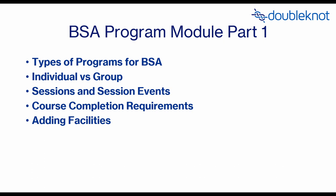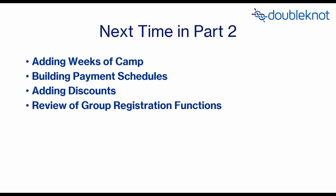Today's video is the program module for Boy Scouts, part one. We're going to go through the program module and how to best utilize it for Boy Scouts of America councils. There are really two types of programs agenda-wise. We'll cover individual versus group setup programs, sessions and session events, course completion requirements, and adding facilities. In part two we'll cover adding weeks of camp, building payment schedules, and discounts.